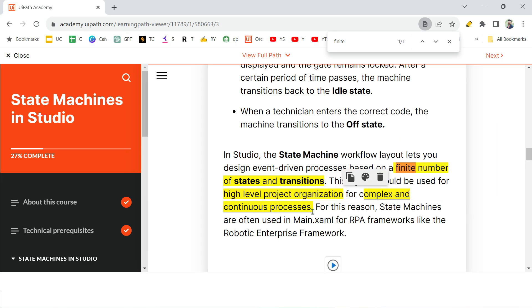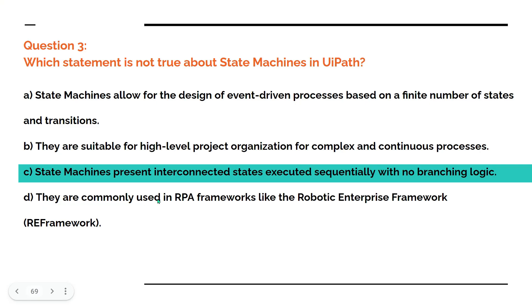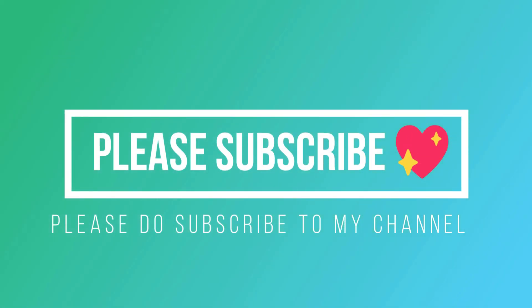Option D is correct — state machines are commonly used in RPA frameworks; if you have used the RE Framework, you know that state machines are the main component of that framework. Thank you for watching, and let's move on to our next topic.